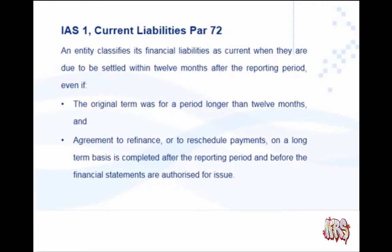To explain with an example: if you buy a building and finance it with a loan to be paid back within two years, in the first year the loan is for longer than 12 months and is therefore a non-current liability. But in the second year you have to pay it within 12 months, so it becomes a current liability.